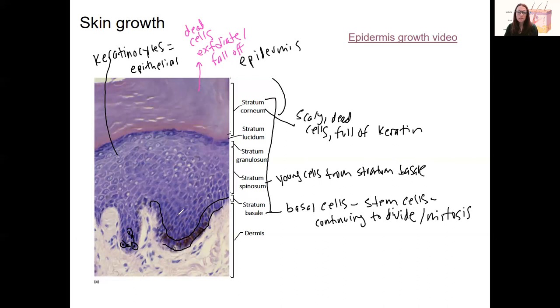You can see the stratum spinosum is quite thick. So the cells up here are a little less young than they are down here. They didn't all just divide, but they continue pushing up. I'll have a little animation of this to show you in just a moment. So this is pushing up via cell division. Cell division is causing this.